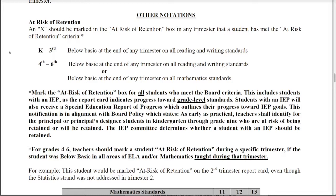The student who has an IEP will also receive a special education report of progress, and that will outline their progress toward their IEP goals. It's important to look at these things in different areas — the elementary report card is reporting progress towards grade level standards, and the special education report of progress is reporting progress towards IEP goals.